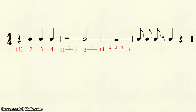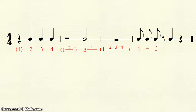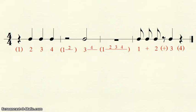The last measure begins with three eighth notes, so we write 1, and, 2, which leaves us at the second half of beat 2. Here we see an eighth rest, so we write an 'and' and put it in parentheses. We end with a quarter note and quarter rest, beats 3 and 4, with the 4 in parentheses.